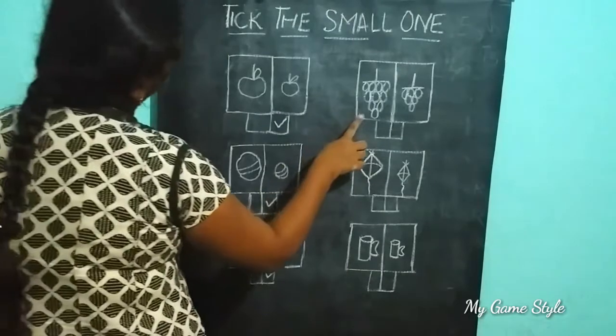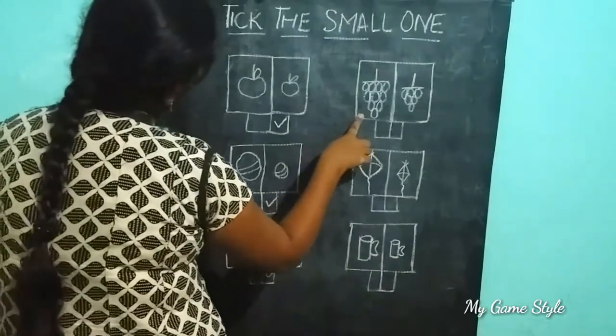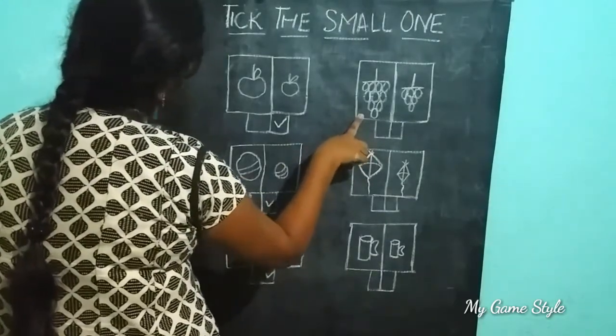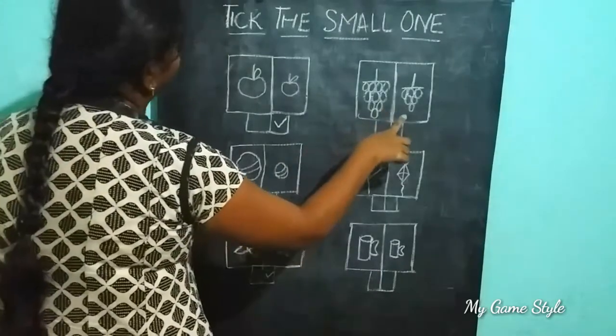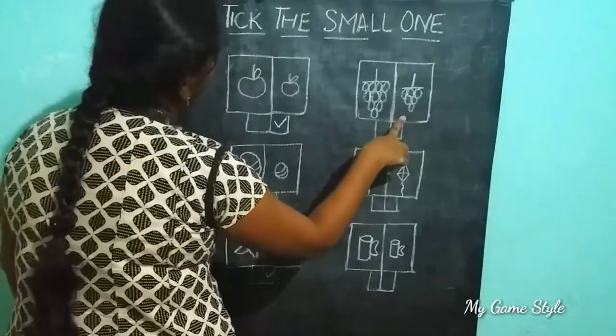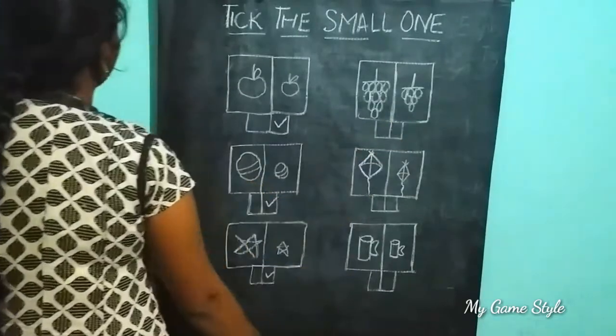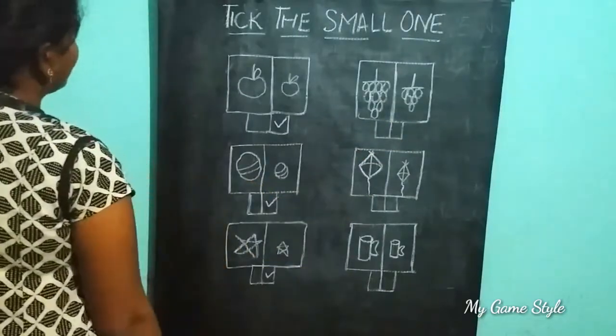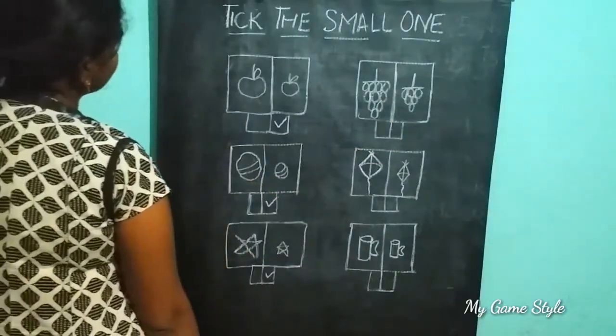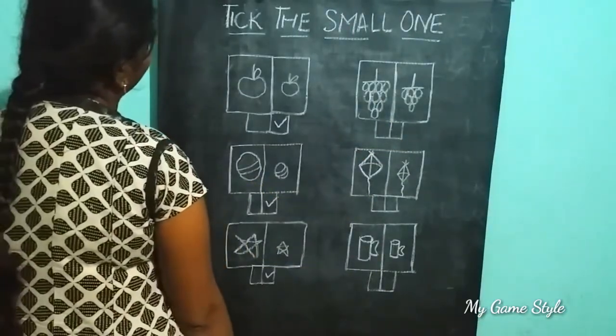Here this is a big grapes. Here this is a small grapes. So we need to tick the small one.